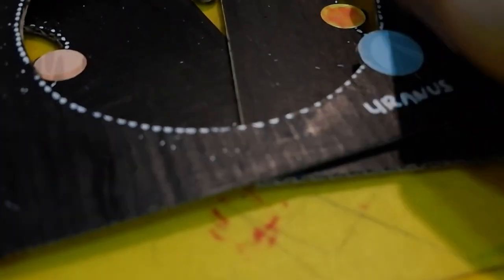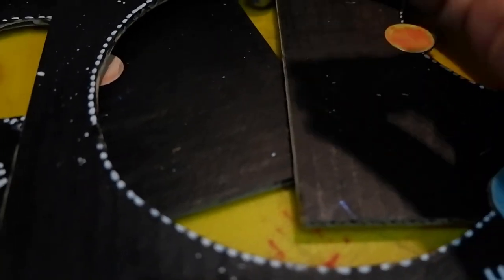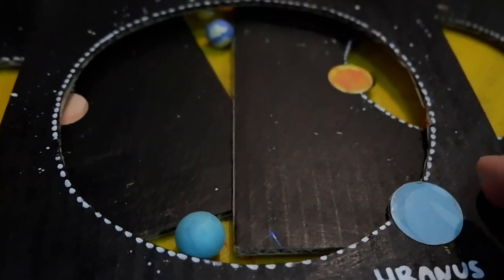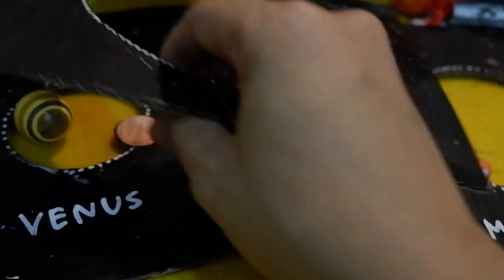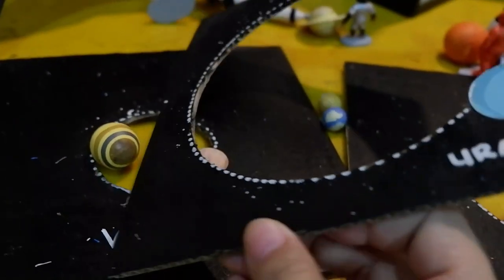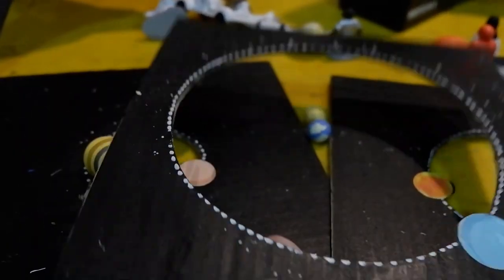Uranus. Tinggal satu lagi nih, ini Uranus. Oh my god, masih banyak. Wow, nah ini semua dari kardus. Ternyata ini masih dipot, dicet warna hitam.